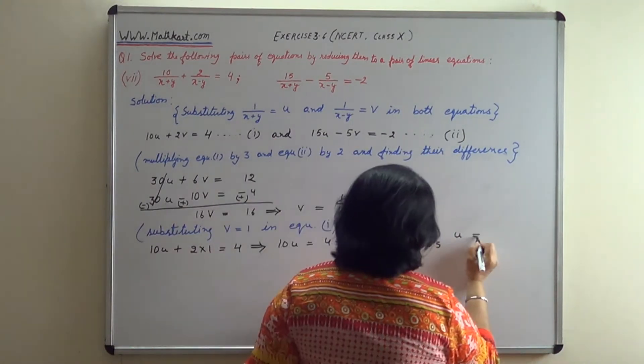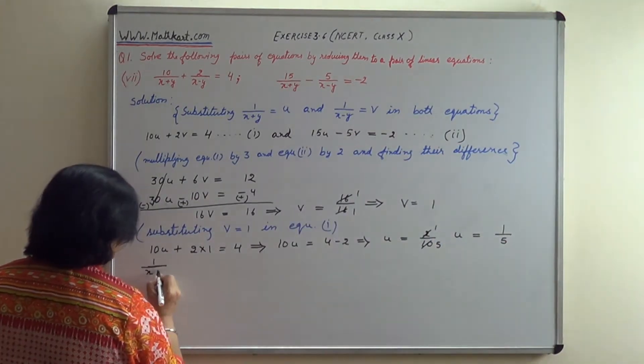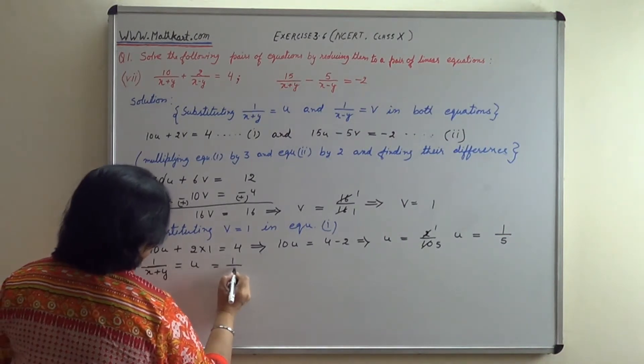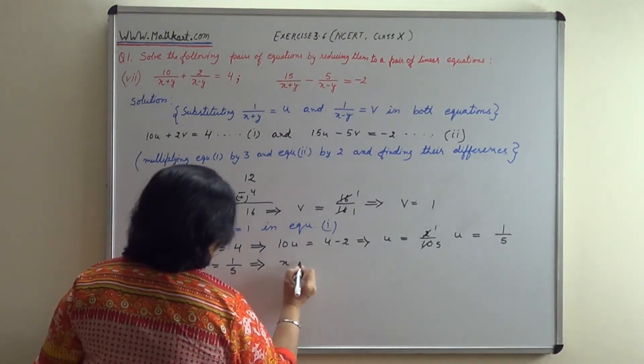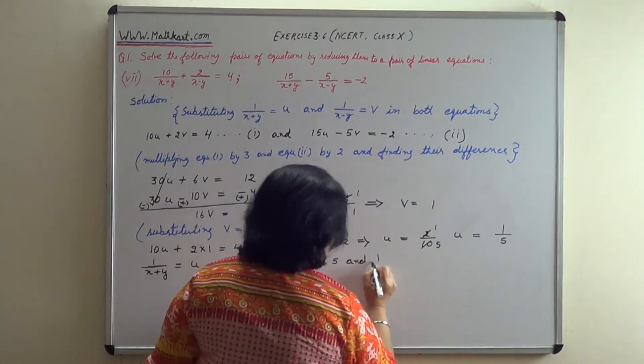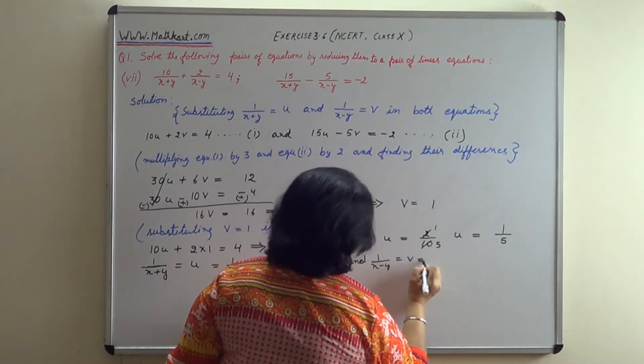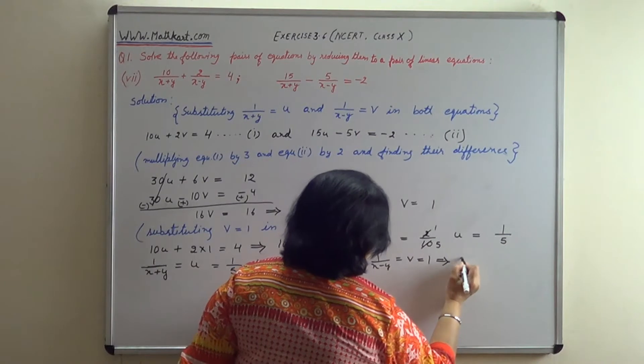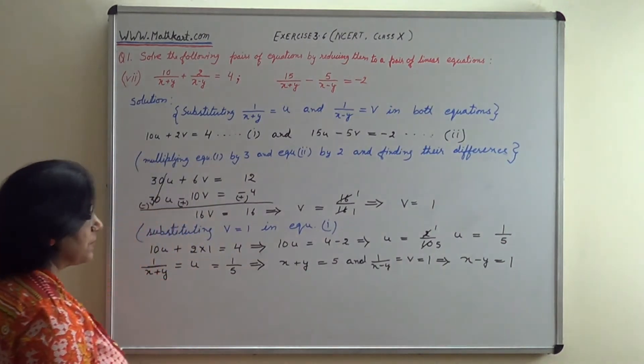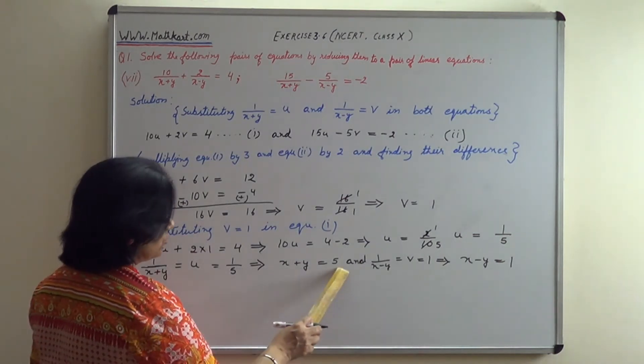Since 1 upon x plus y equals u equals 1 upon 5, this implies that x plus y equals 5. And 1 upon x minus y equals v equals 1, which implies that x minus y equals 1.